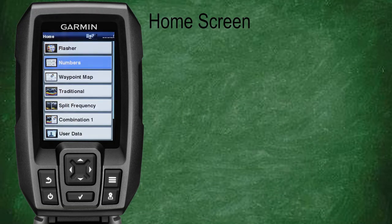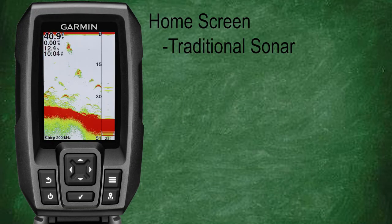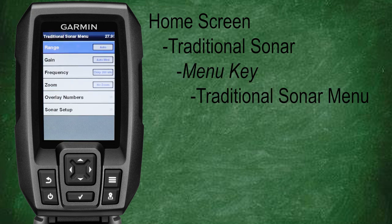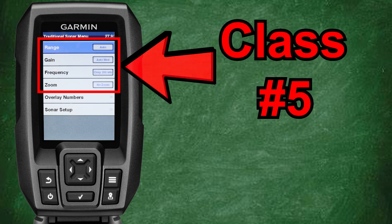From the home screen, scroll down and select traditional sonar. This will bring us to the traditional sonar screen. Now let's press the menu key. This will bring up the menu options for the traditional sonar screen. Here you have the ability to adjust and change settings for your range, gain, frequency, zoom, overlay numbers, and sonar setup.